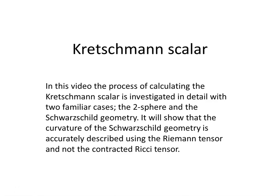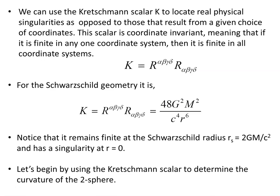In this video, we'll look at the process for calculating the Kretschmann Scalar in detail with two familiar cases: the 2-sphere and the Schwarzschild geometry. This video will show that the curvature of the Schwarzschild geometry is accurately described using the Riemann tensor and not the contracted Ricci tensor. We can use the Kretschmann Scalar K to locate real physical singularities, as opposed to those that result from a given choice of coordinates.